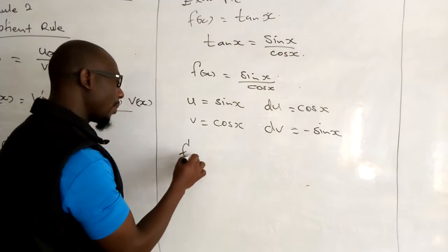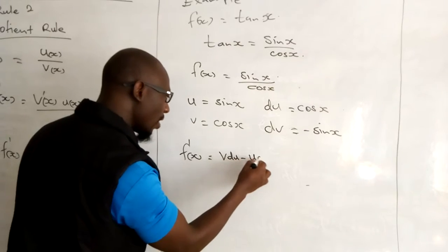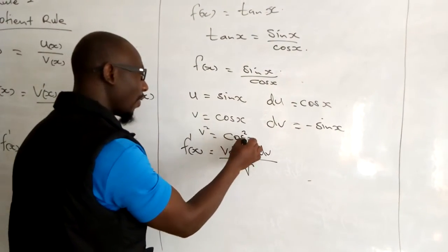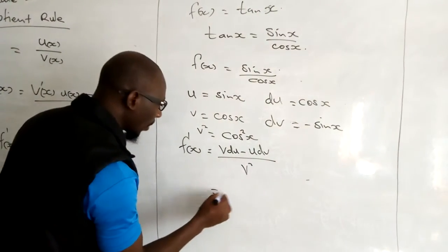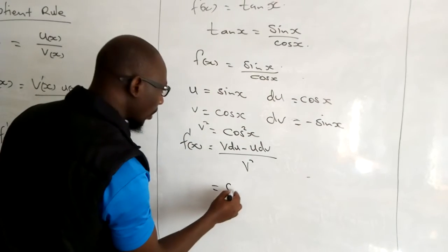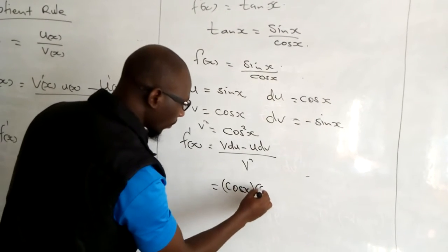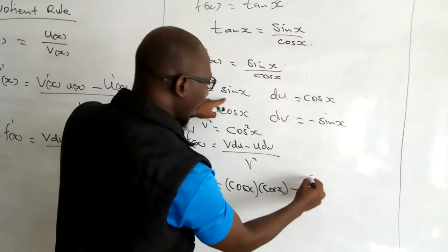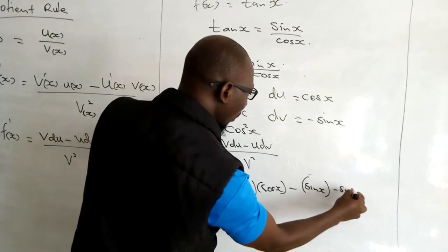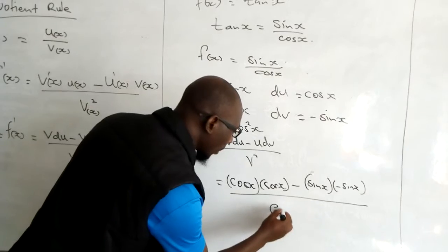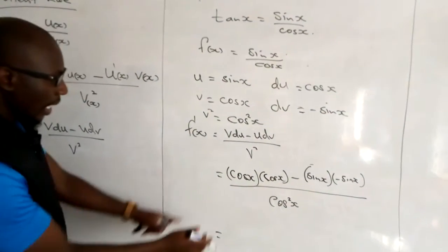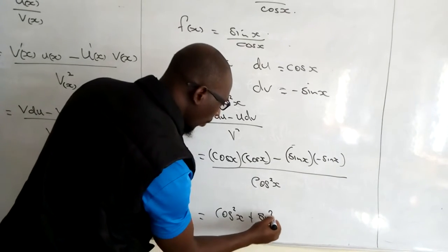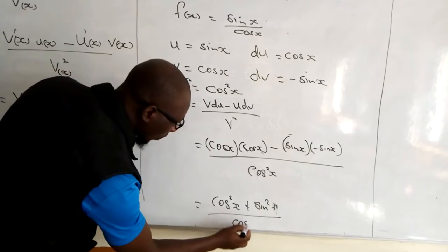So you take these values and replace them in the formula. f prime shall be equal to v du minus u dv, over v squared. v squared is cos squared of x. That gives us: v du is cos x multiplied by cos x, minus u dv which is sin x multiplied by negative sine x, all divided by cos squared x. Simplifying, this becomes cosine squared of x plus sin squared of x, over cosine squared of x.